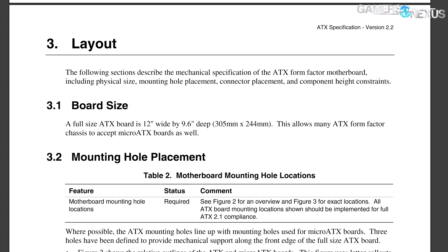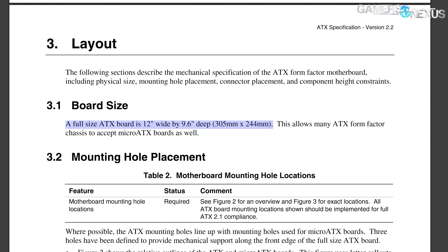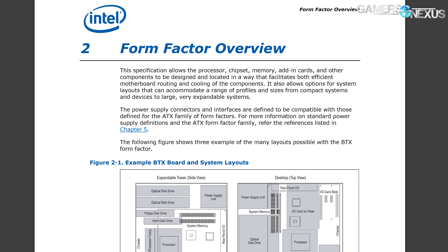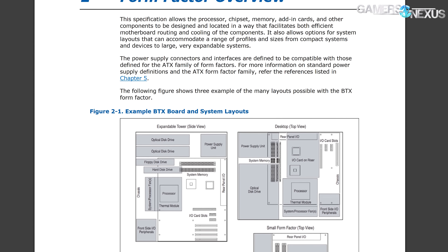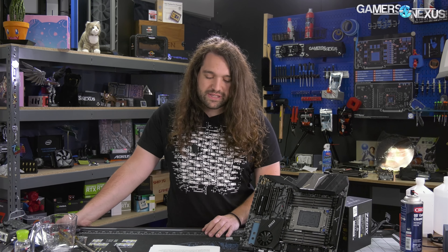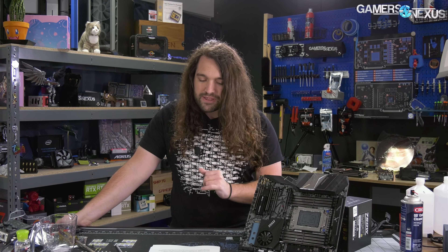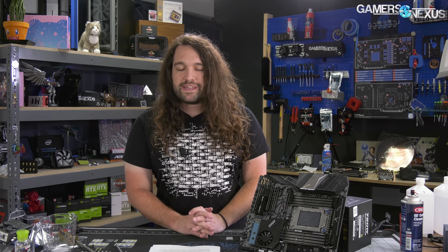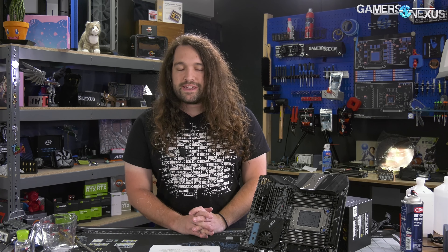ATX is a spec released by Intel in 1995. It's occasionally been updated since then. It stands for Advanced Technology Extended, and it was intended to replace the older de facto AT form factor, a standard published by IBM and the IBM AT PC that was released in 1984. It's been used as the industry-wide standard since its introduction, and thus far has been resistant to Intel's attempts to replace it — for example, the BTX form factor motherboards from 2004, or the new ATX 12VO standard published in 2019 for PSUs and motherboards.